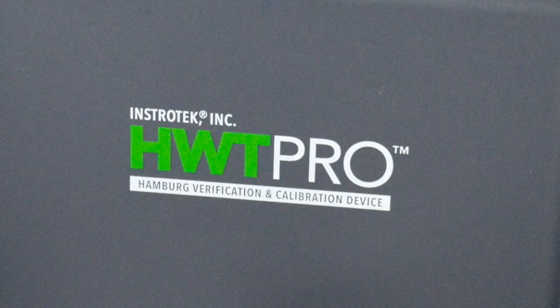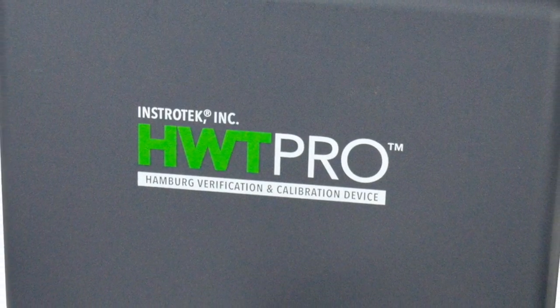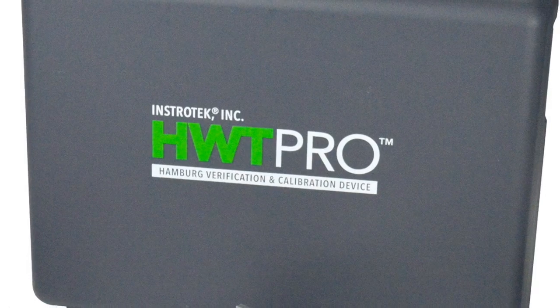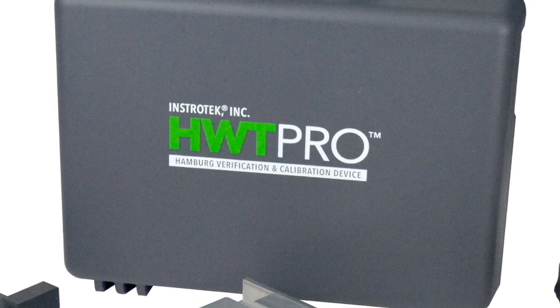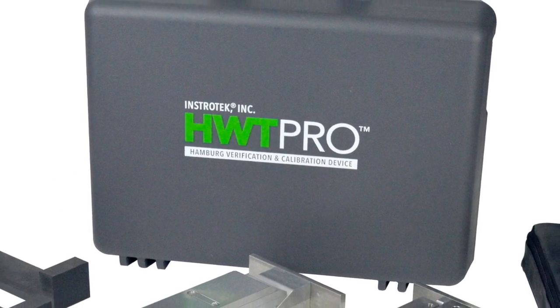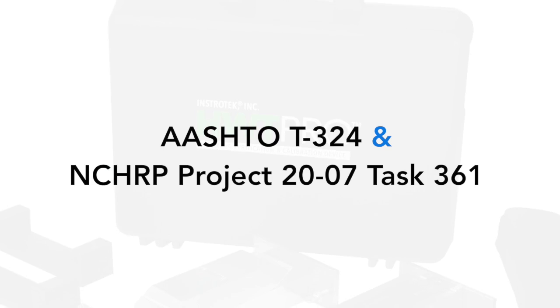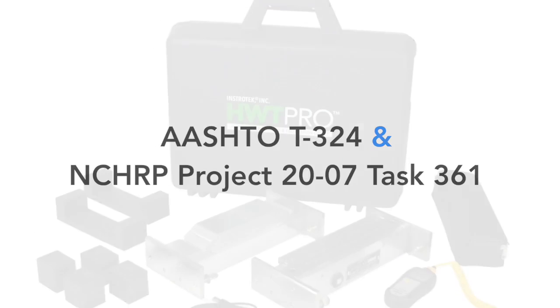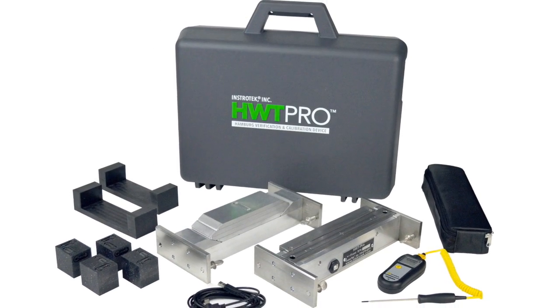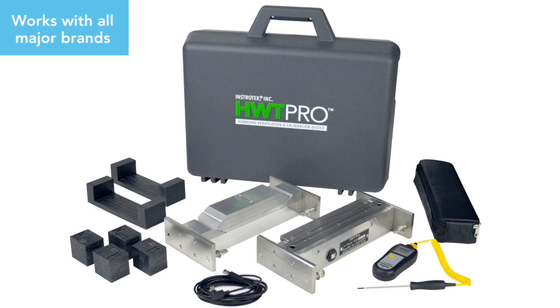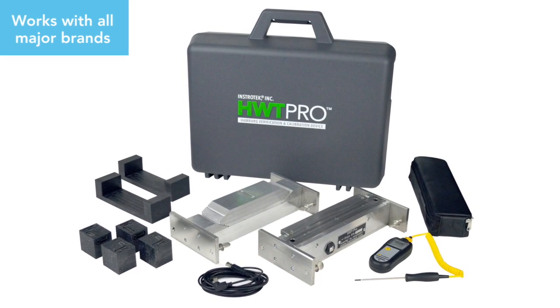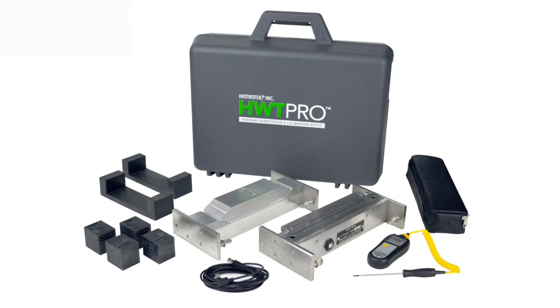The HWT Pro kit is a fast and accurate verification and calibration device for the Hamburg Wheel Tracker. The HWT Pro verifies all the calibration requirements of AASHTO T324 and exceeds the recommendations of NCHRP project 20-07 task 361. The HWT Pro is the perfect tool to monitor and validate your Hamburg wheel's performance.